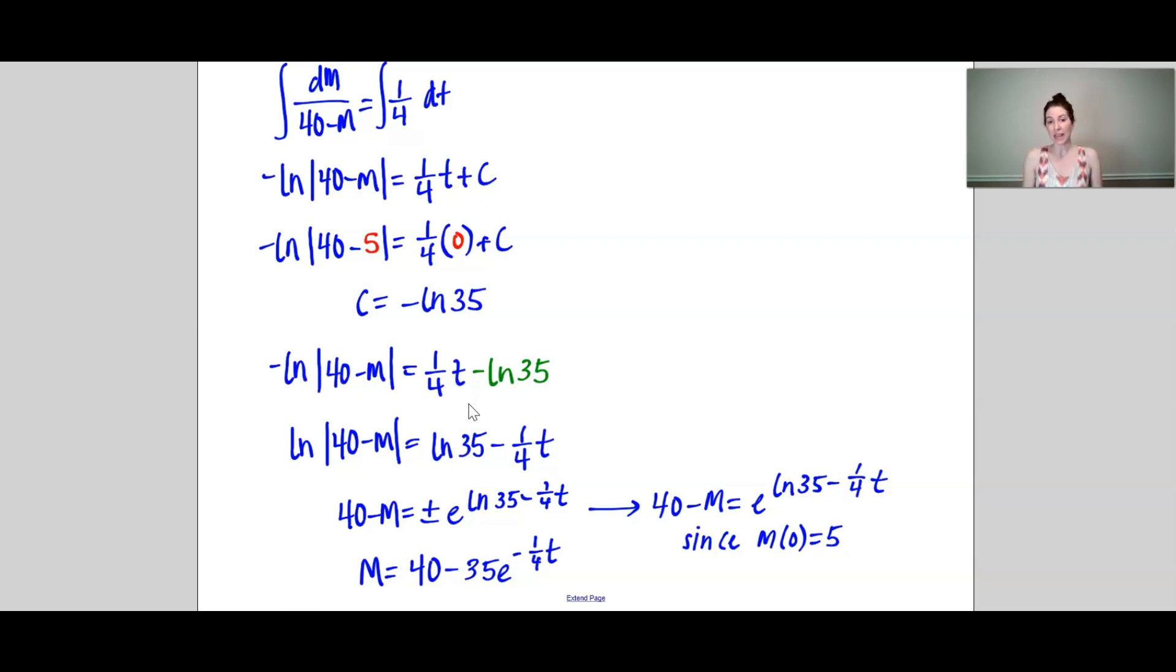And then I changed to exponential form. Now when you change to exponential form it could be positive or negative, and to determine which one it is you do need to look at the initial condition. And since M was a positive value, we are going to take the positive side of that.